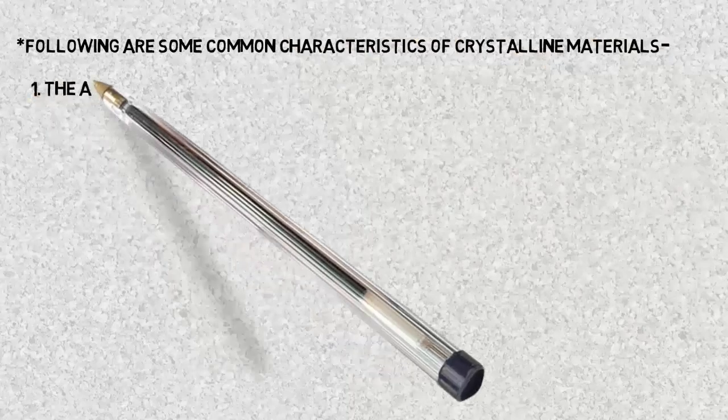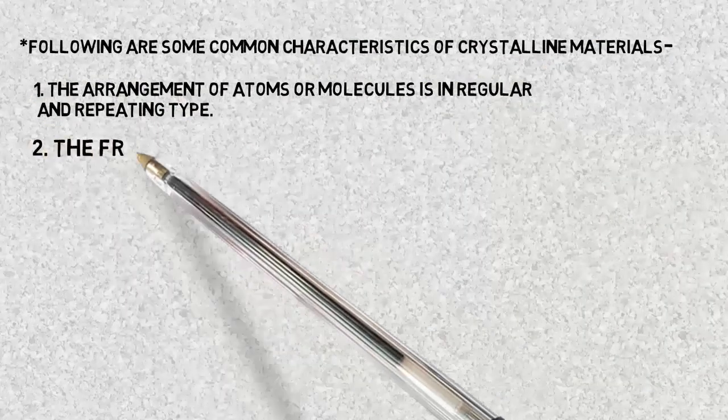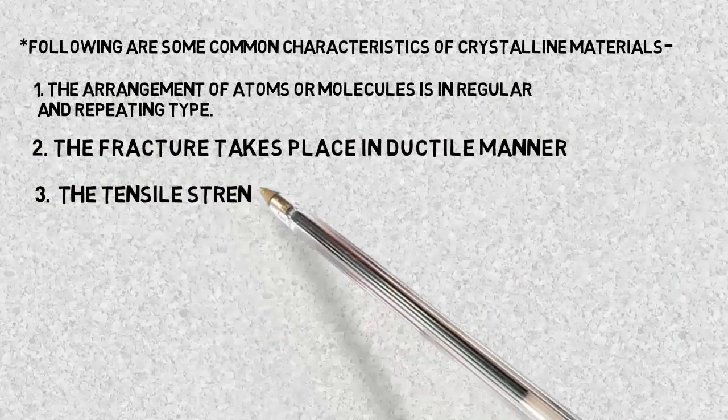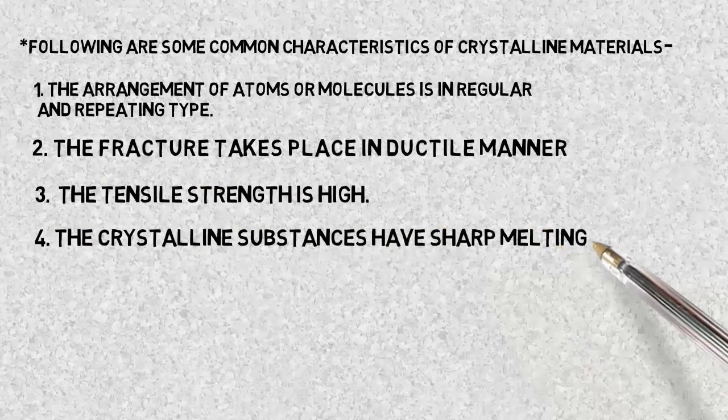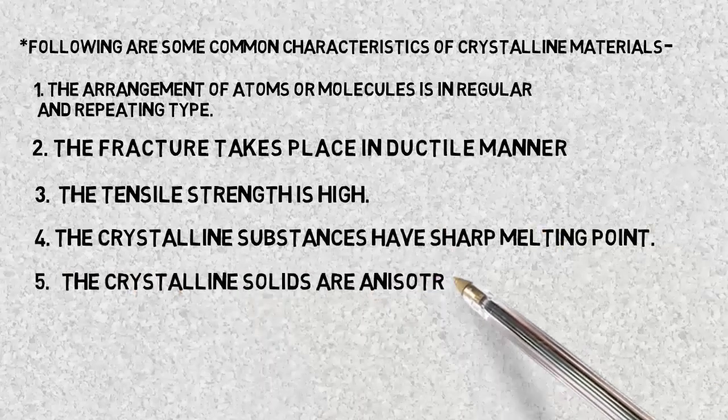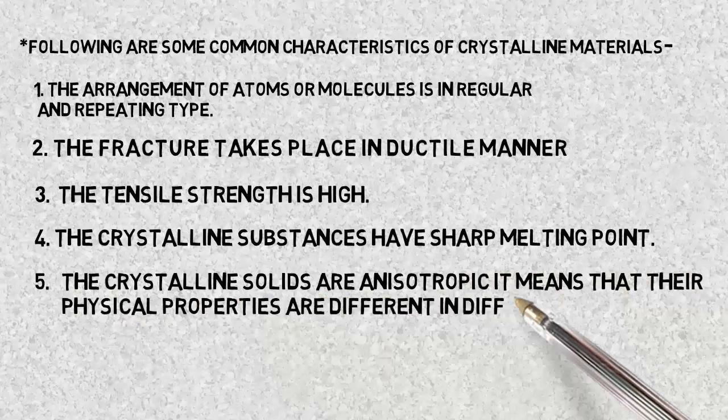Following are some characteristics of crystalline materials. First, the arrangement of atoms and molecules are in regular pattern. Fracture takes place in ductile manner. Tensile strength is high. Crystalline solids have sharp melting point. And fifth, crystalline solids are anisotropic in nature, meaning they have different properties in different directions.